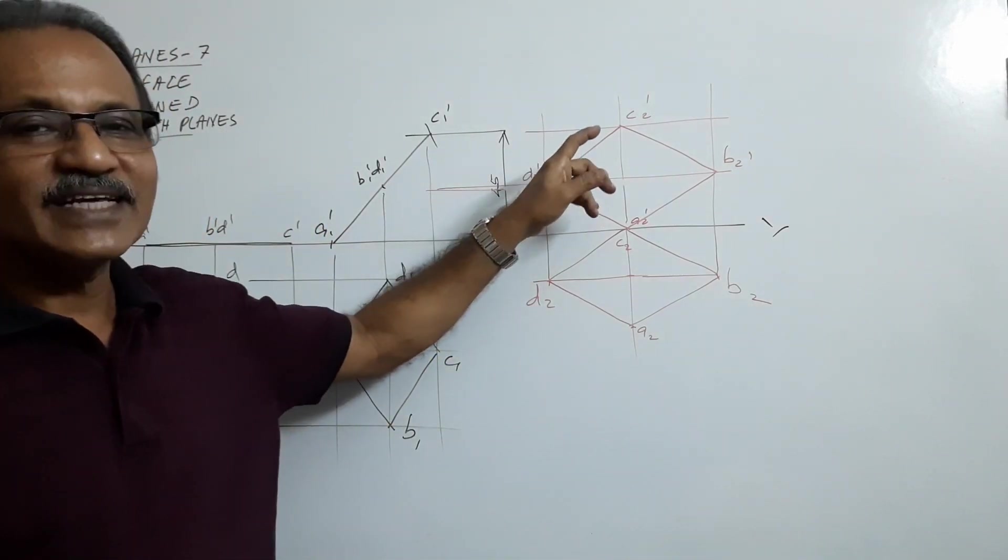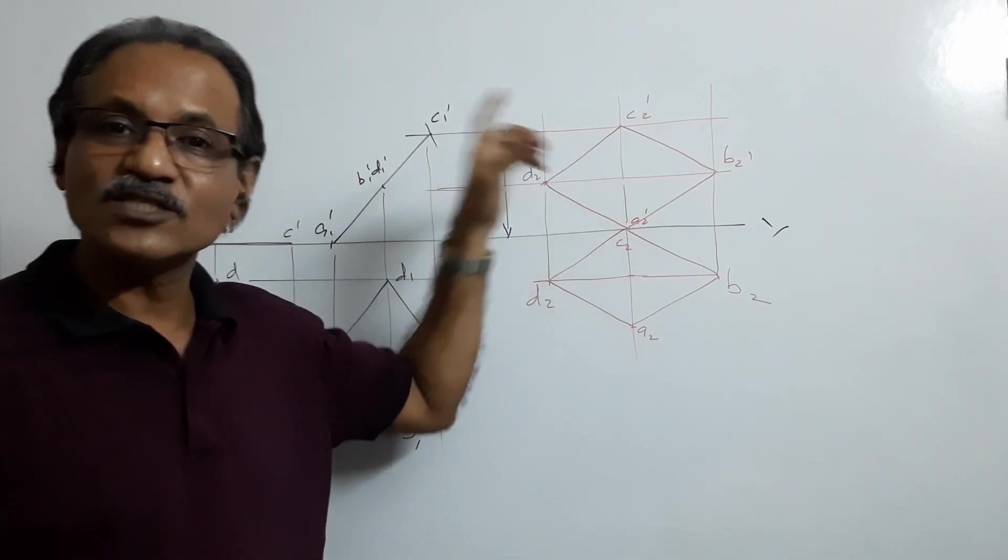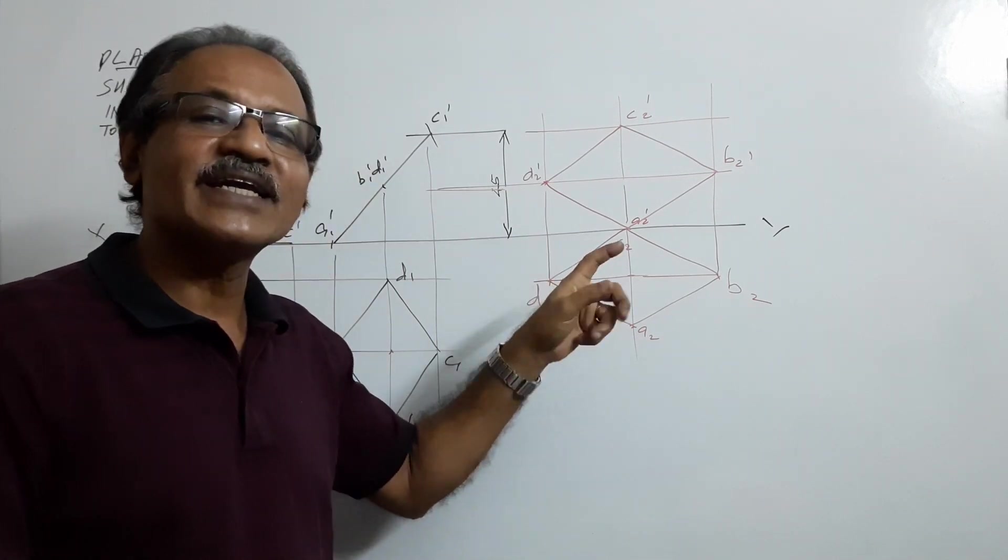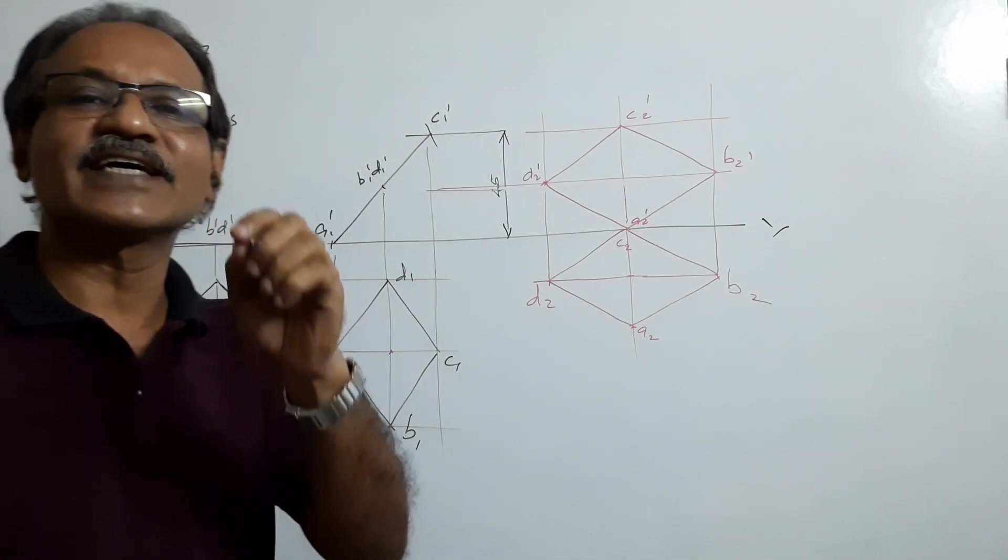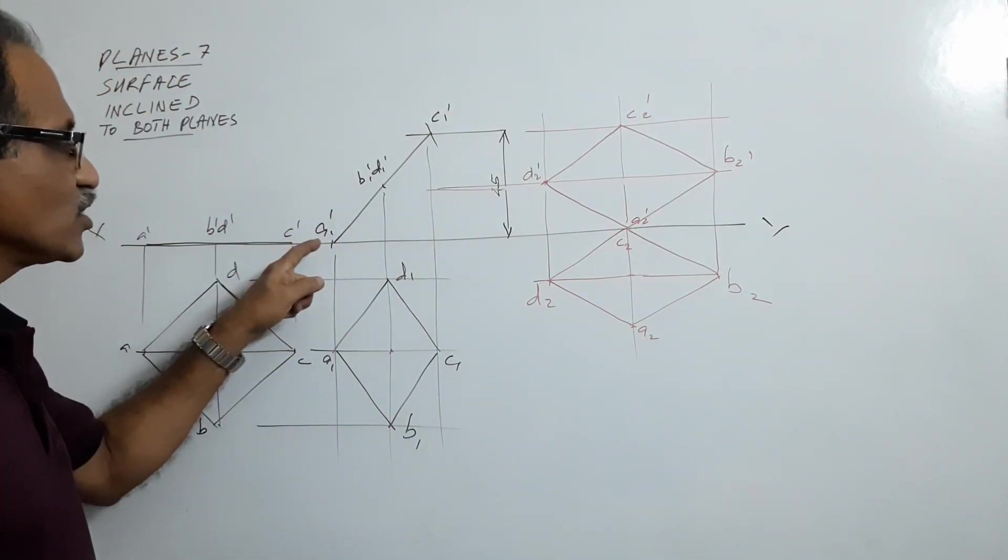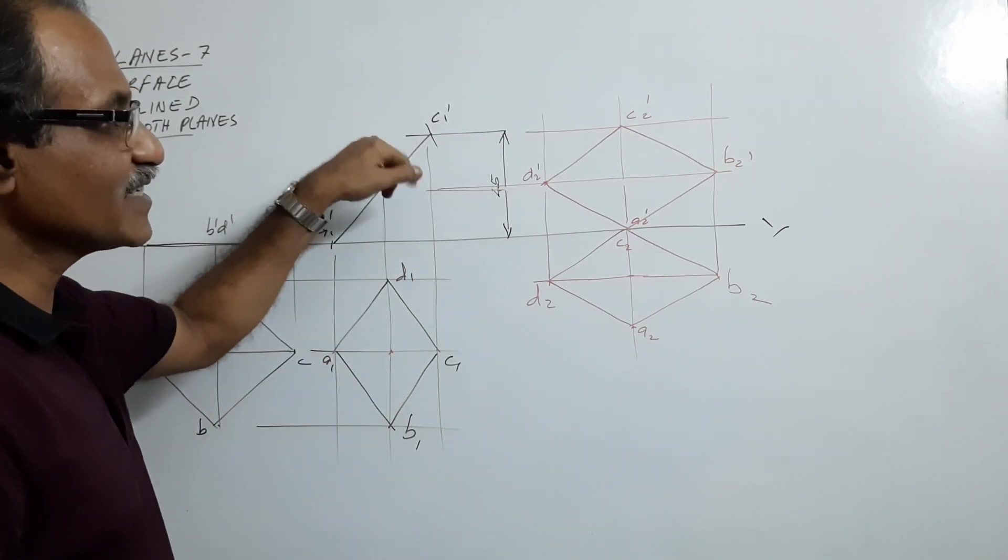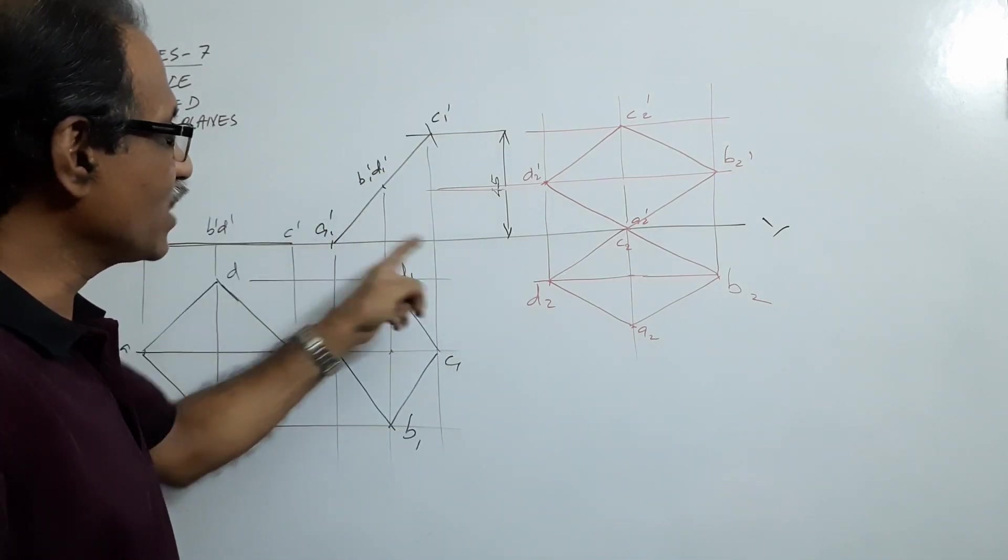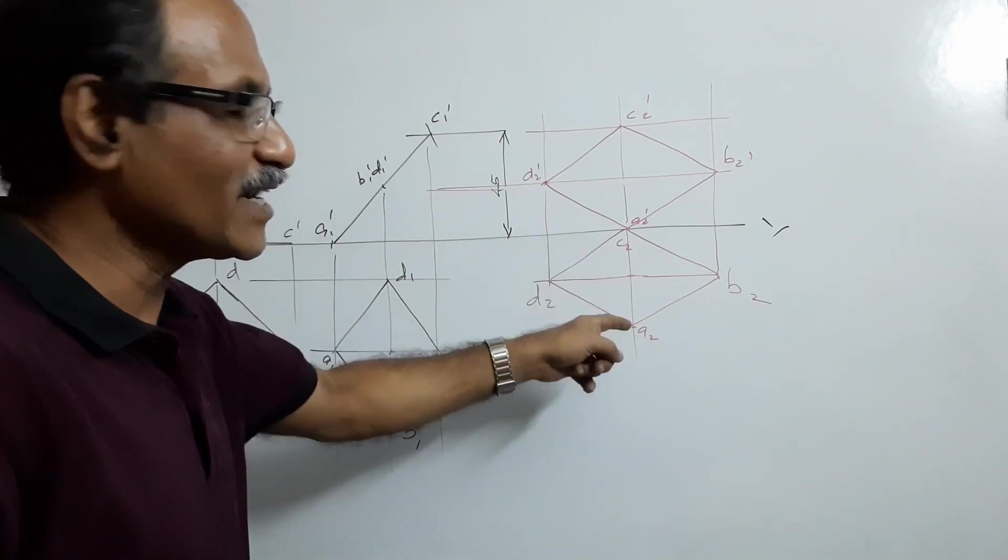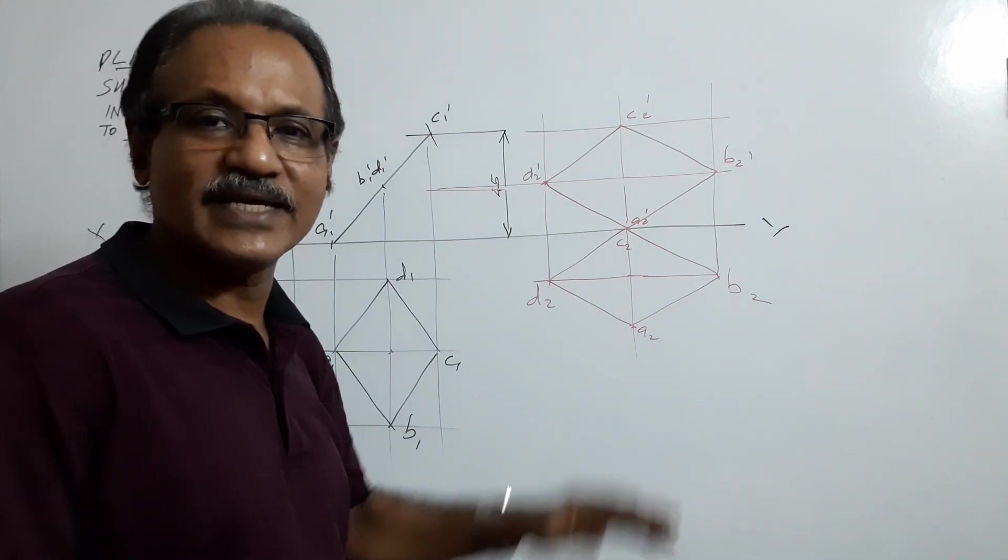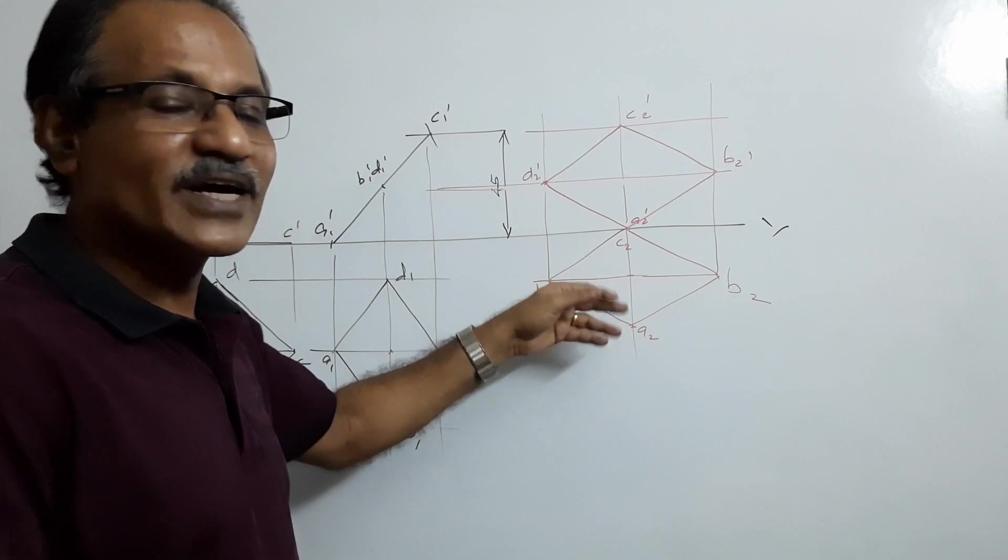Instead of specifying the smaller diagonal in the elevation, the smaller diagonal in the plan can be specified. If that is specified as say 40mm, what would you have done? You would have chosen A1 dash anywhere on XY, 40mm away, draw a projector, cut the elevation. So this horizontal line will not be drawn. You get some rhombus as the elevation. There the elevation rhombus is not bothered, here we are not bothered about the plan rhombus.